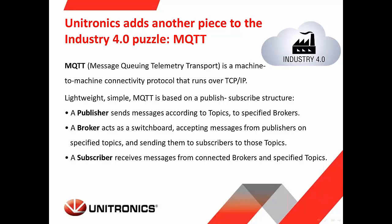MQTT is based on a publish-subscribe structure. The publisher sends messages according to topics to specified brokers. The broker acts like a switchboard — it accepts messages from publishers for specified topics and then sends them to subscribers of those topics. A subscriber receives messages from the broker for the specified topics it subscribed to.